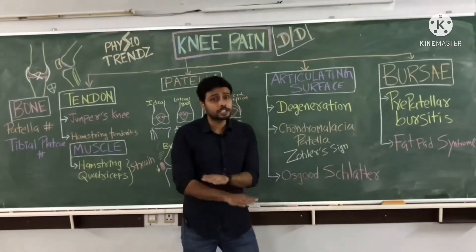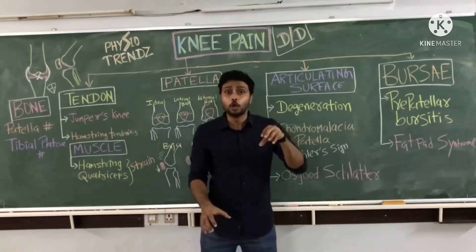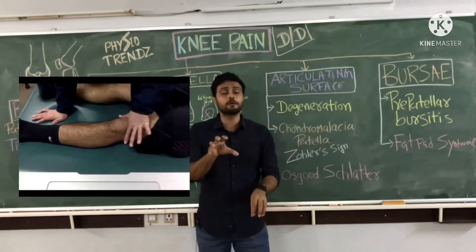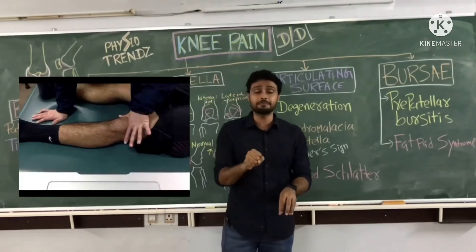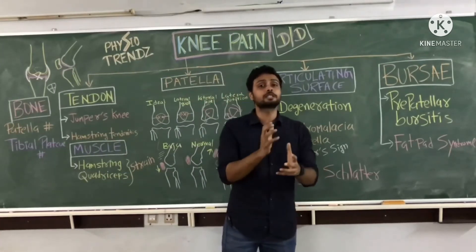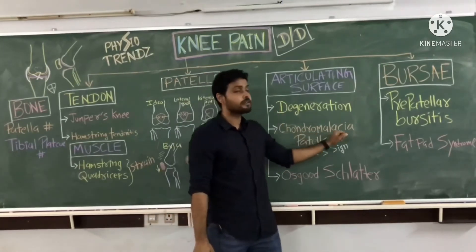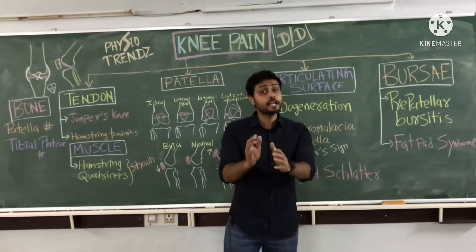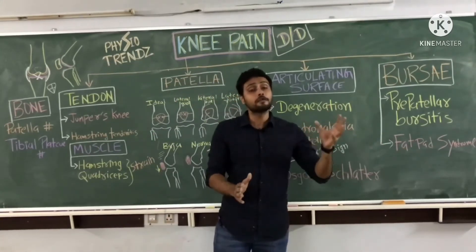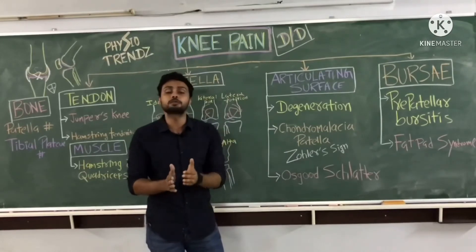To identify chondromalacia patella pain, we perform Zohlen's sign. The patient will be in a supine lying position with the knee joint in a neutral position. The therapist holds the patella in a particular position, then asks the patient to perform active contraction of the quadriceps muscle. If the patient complains of pain or increasing symptoms, the test is positive, suggesting chondromalacia patella. Importantly, chondromalacia patella is not an age-related condition, so it must be assessed across all age populations.